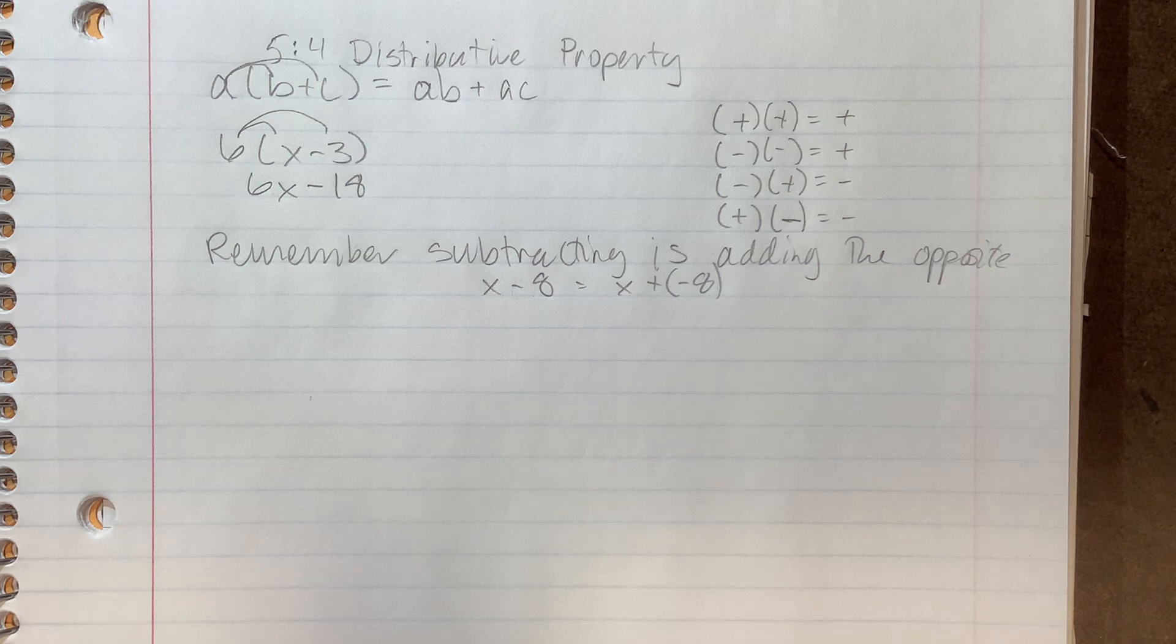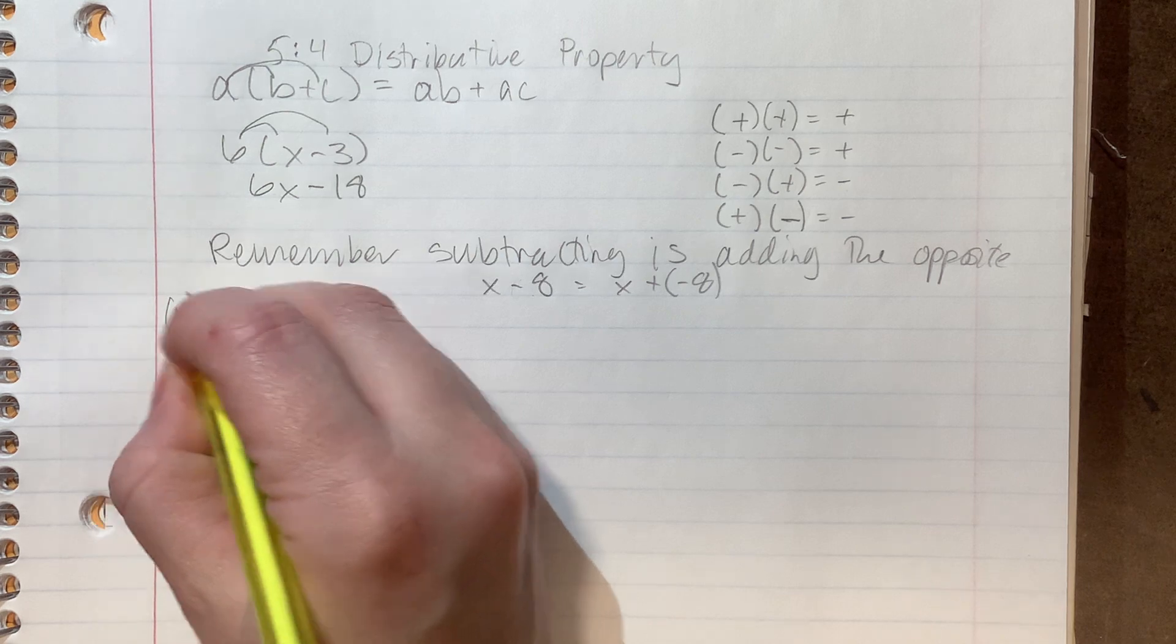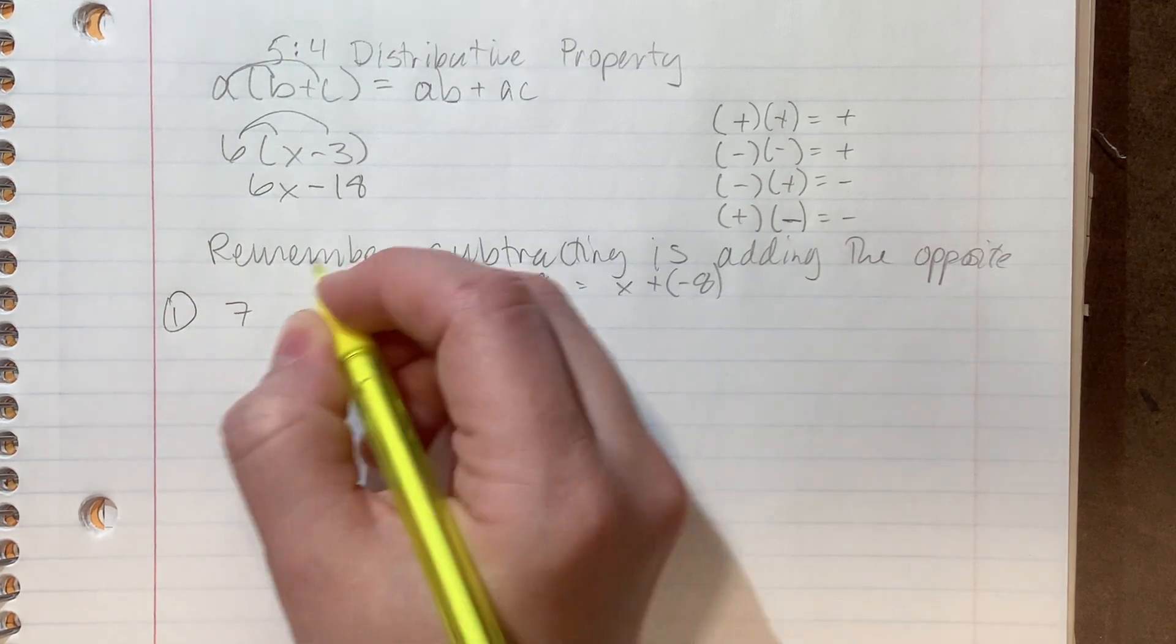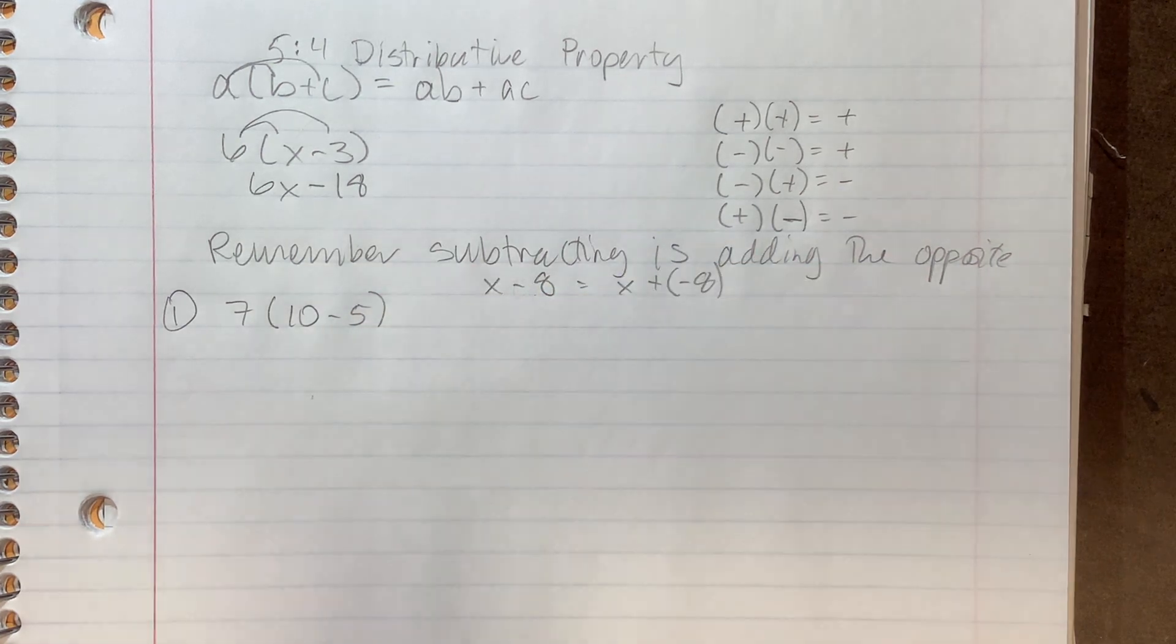So now we're just going to do a bunch of examples so you can practice. Now, there's an assignment on MathSpace, which I actually like better than the book's assignment. In the book, it has you first practice this with all numbers, which is gonna feel weird, but it's a good practice one way or another. So a practice problem like seven times 10 minus five.